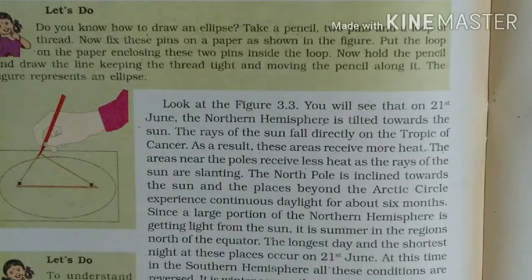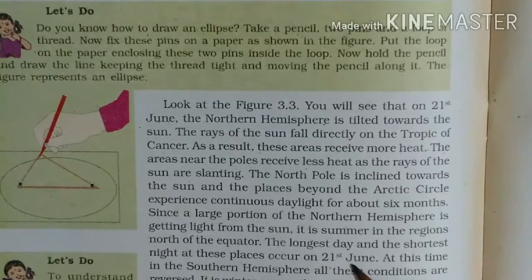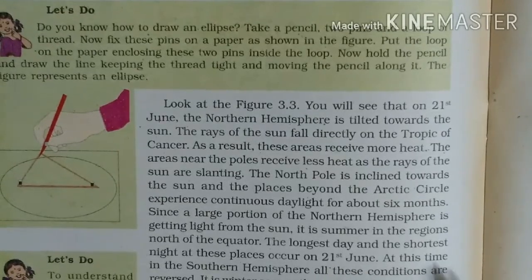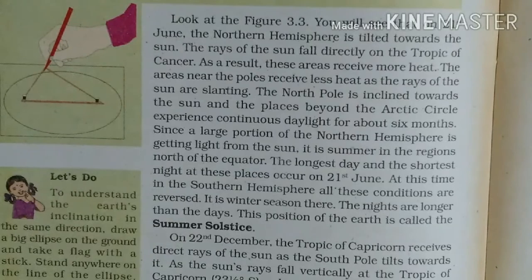This is the summer season in the region north of the equator. The north side has the summer season with the longest day and the shortest night. On 21st June, what happens in the Southern Hemisphere? All these conditions are reversed — the opposite conditions apply there.